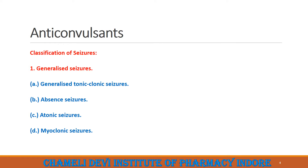There are many types of seizures, which range in severity. Seizures can be classified into basically two categories: the first is Generalized seizure, and the second is Partial seizure.